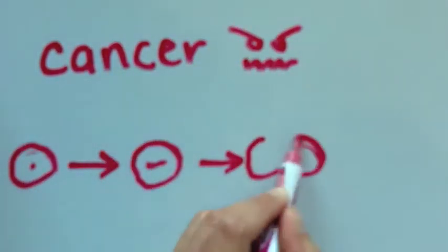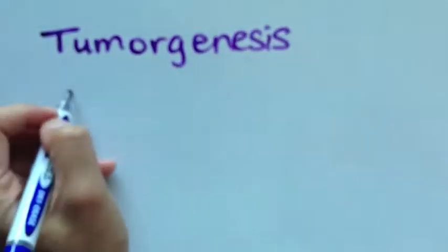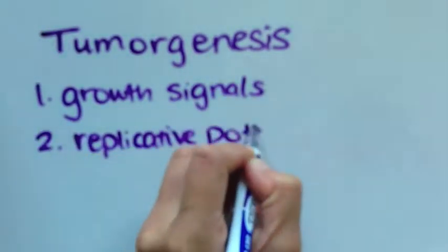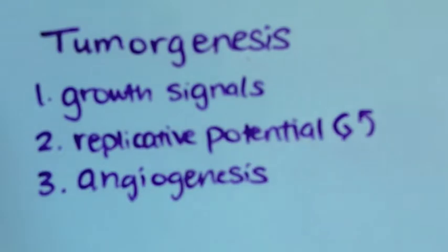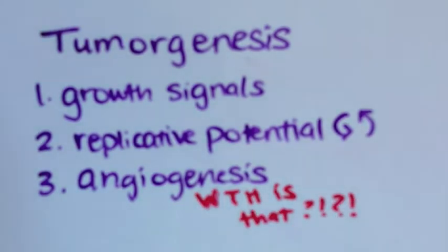Cancer development is characterized by uncontrolled cell growth. Essential hallmarks in tumor genesis include self-sufficiency in growth signals, limitless replicative potential, and sustained angiogenesis.